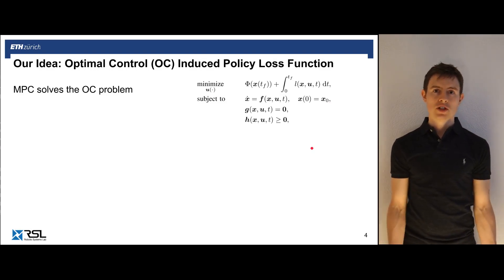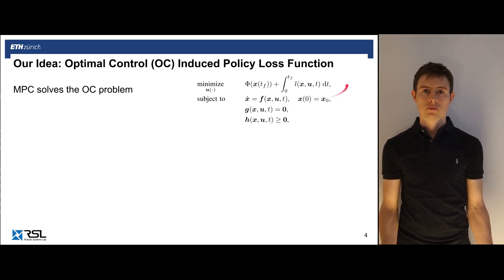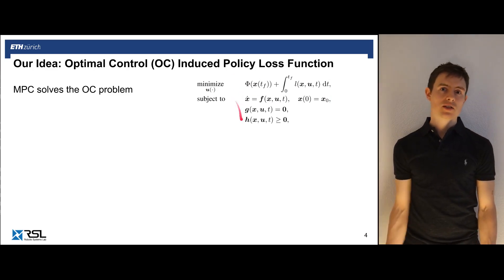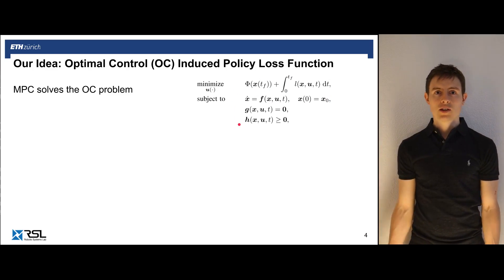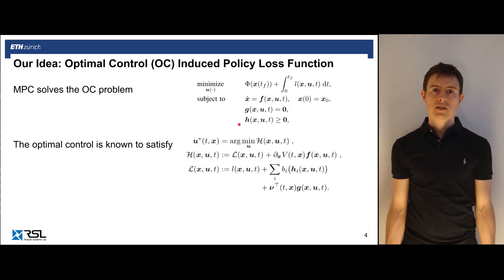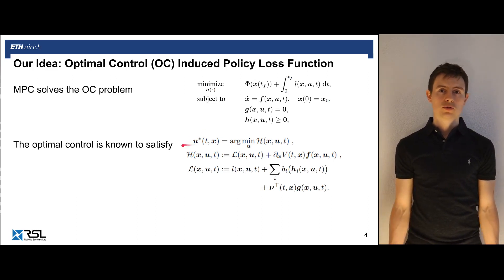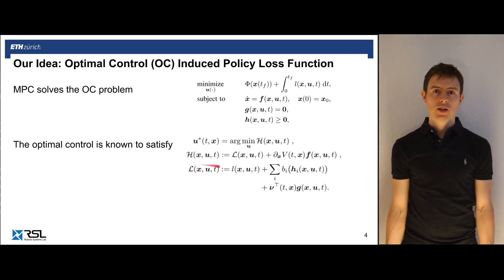Our idea is to use imitation learning in combination with optimal control as a policy search algorithm. We start with the following. MPC solves an optimal control problem that consists of final and intermediate cost, constraints about dynamics and further constraints on states or inputs. It is also known that the optimal solution to this problem satisfies the following relation. The optimal control U star is the minimum of the quantity called control Hamiltonian calligraphic H, sometimes also known as the Q function. The control Hamiltonian H consists of quantities that are either directly related to the optimal control problem or that are anyways computed by the optimal control solver, such as Lagrange multipliers for constraints and the value function of the problem for optimal states.